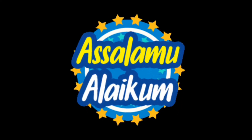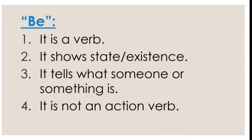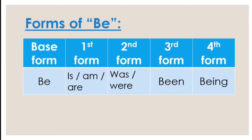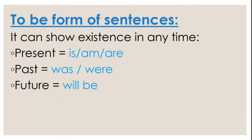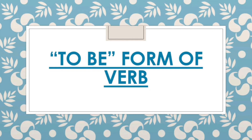So let's continue with the revision: to be forms of verb. 'Be' is a verb. It shows a state or existence — yeh kisih bhi chiz ka wujud batata hai, ya kisih bhi chiz ki halaat batata hai. With present time: is, am, are. Past time: was, were. And future time: will be. Agar apne to be form of verb ka part one nahi dhekha hai, to mein eska link description me dal dhungi. You can go and check it out, and then come back to this video.